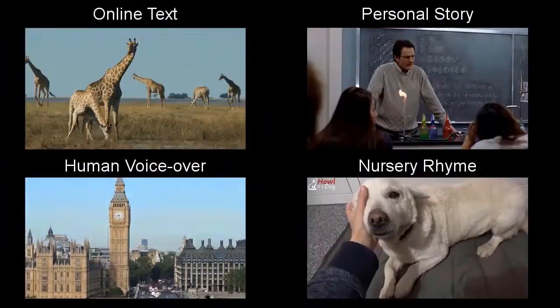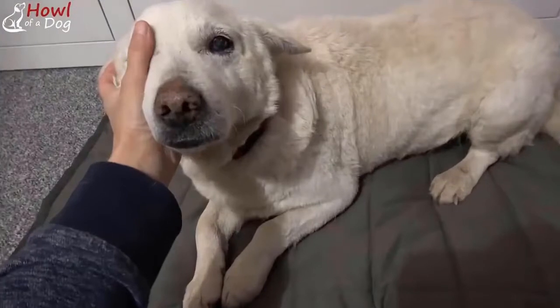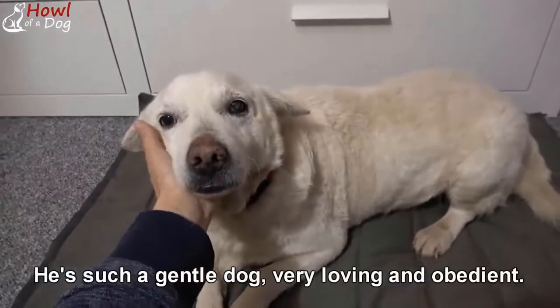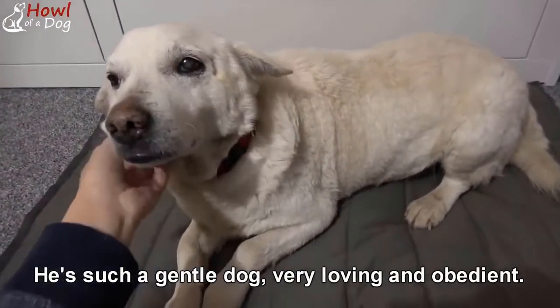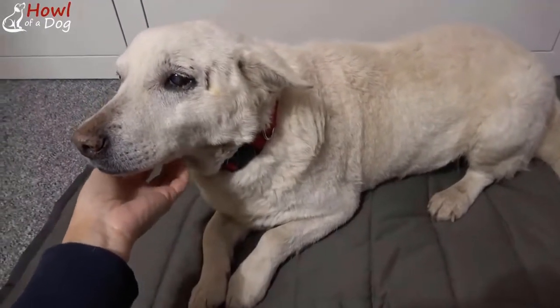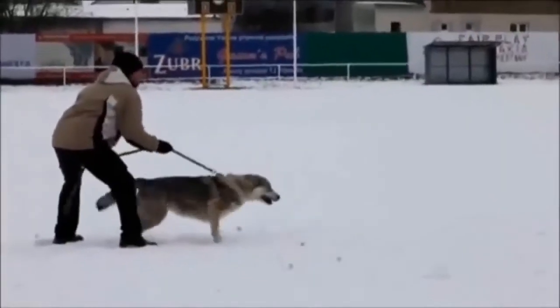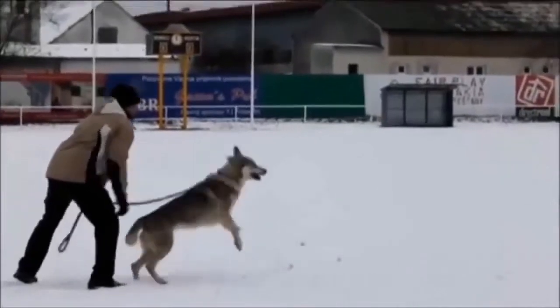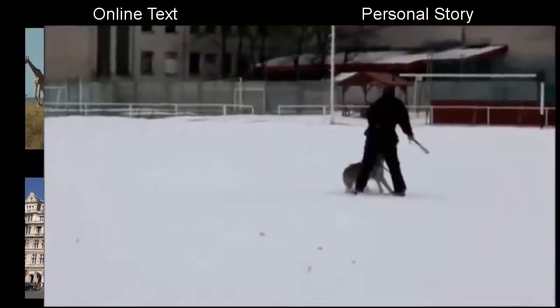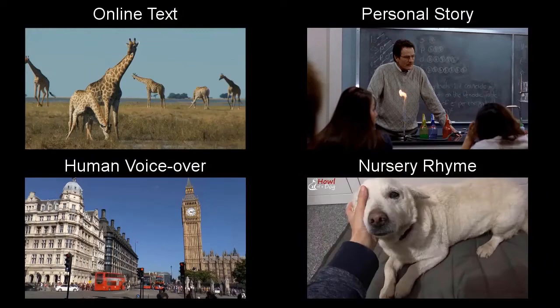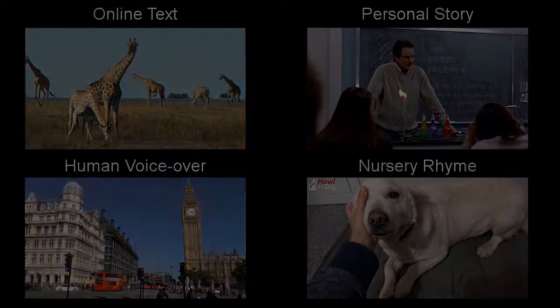And for nursery rhymes: 'I have a dog. I have a pet. He is a dog. And he says woof, woof.' Various examples can be seen in the supplementary files. The video montage process involves three simple steps.